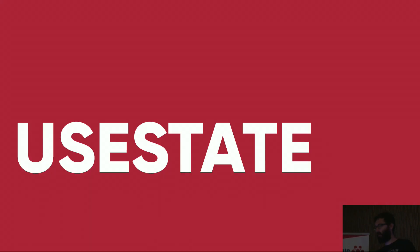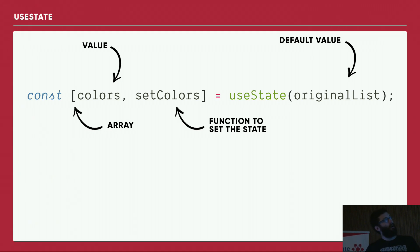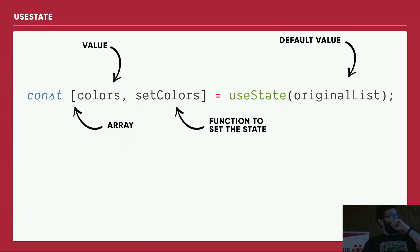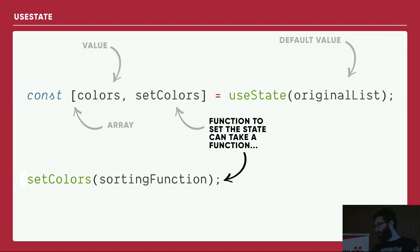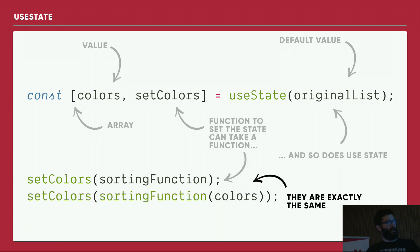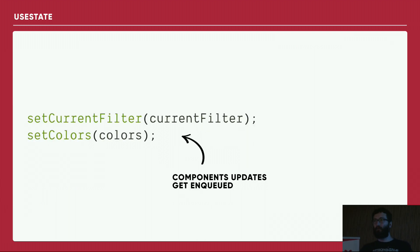The first hook we worked with was `useState`. It returns an array where the first element is the current state value and the second is a function to set that state. `useState` itself takes one argument, which is the default state. When you call the setter, you can pass a function — the setter will inject the current state as that function's argument, so you don't have to track it yourself. Multiple calls get enqueued, so you can have a sequence of state updates without weird race conditions.